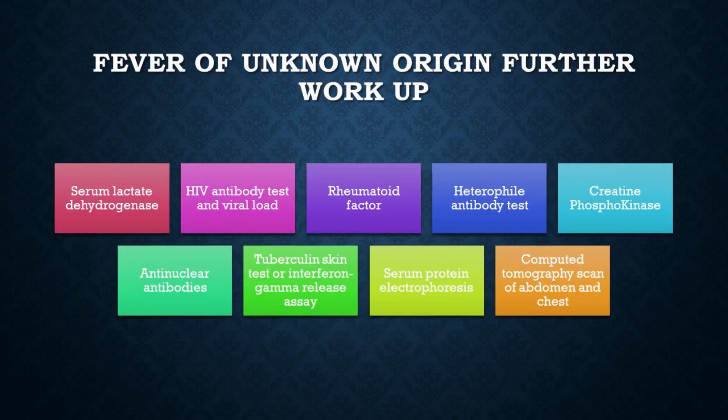We already covered the initial workup for infectious causes. Workup for other causes includes serum LDH — check if you have suspicion for PCP pneumonia. You can check HIV antibody test and viral load, rheumatoid factor, heterophile antibody test, creatinine phosphokinase CPK for conditions causing rhabdomyolysis like seizures or mycoplasma pneumonia, anti-nuclear antibodies, TB skin test or interferon gamma release assay, serum protein electrophoresis for multiple myeloma, and CT scan of the abdomen and chest.